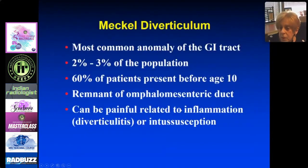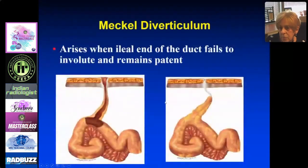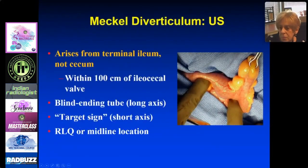Meckel's diverticulum can mimic appendicitis. It's the most common anomaly of the GI tract, affecting 2 to 3% of the population. 60% of patients with Meckel's diverticulum present in the first decade, with pain due to inflammation or intussusception. The diverticulum is a remnant of the omphalomesenteric duct, which in utero connects the bowel to the umbilicus. If the proximal end stays open, you have a Meckel's diverticulum. It arises from the terminal ileum — not the cecum — within 10 centimeters of the ileocecal valve. It is blind ending and shows a target sign on short axis, typically in the right lower quadrant or midline.